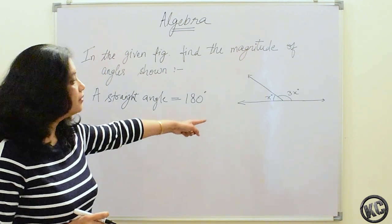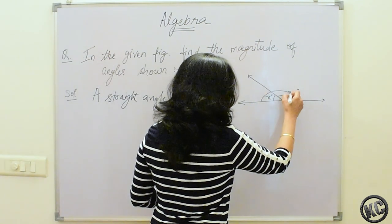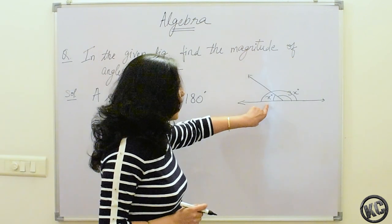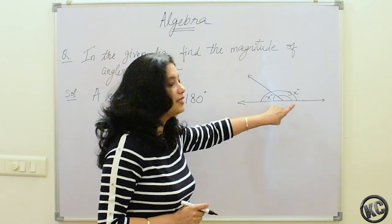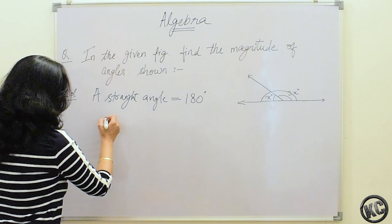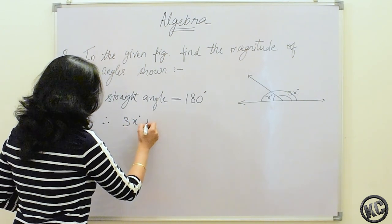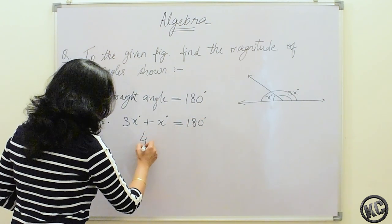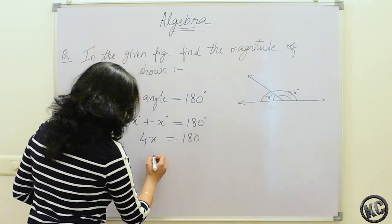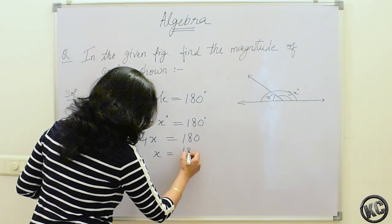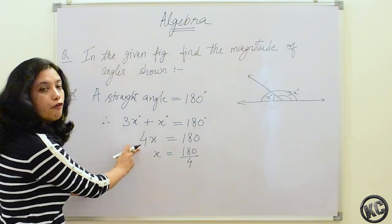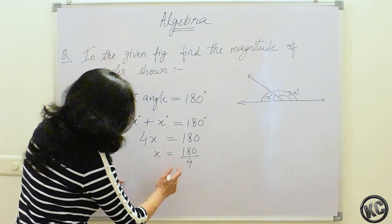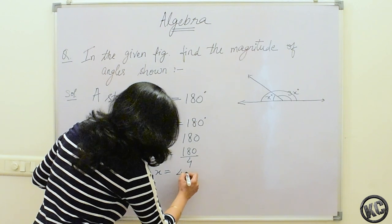A straight angle is equal to 180 degrees. That means this whole angle is equal to 180 degrees. So x plus 3x — the total of both these angles should be 180 degrees. Therefore 3x degrees plus x degrees is equal to 180 degrees. Now 3x plus x becomes 4x equals 180. So x will be 180 divided by 4, since 4 is in multiplication with x and when taken to the other side it becomes division. Therefore x is equal to 45 degrees.